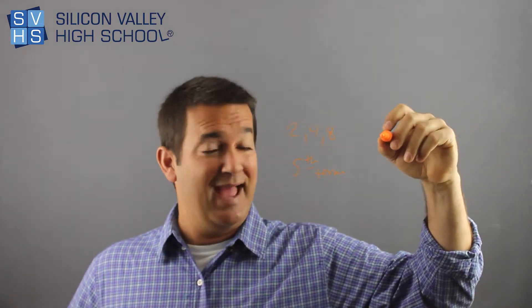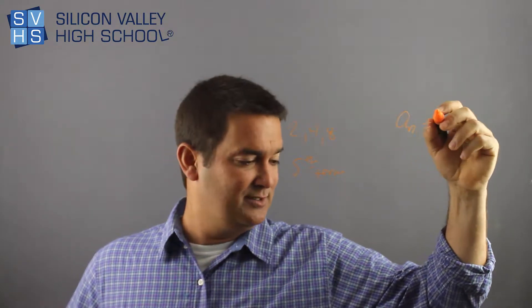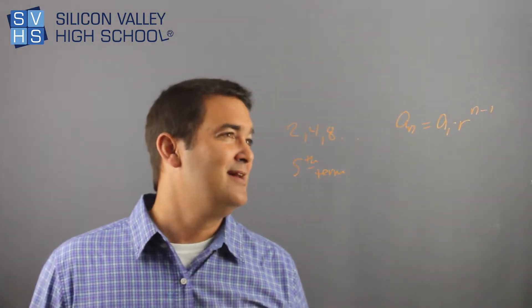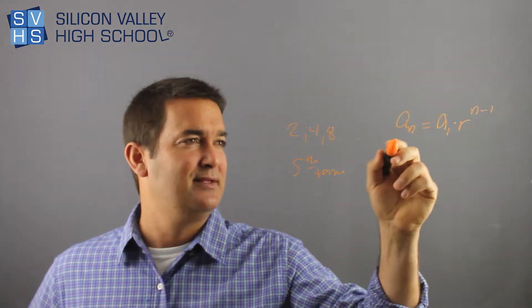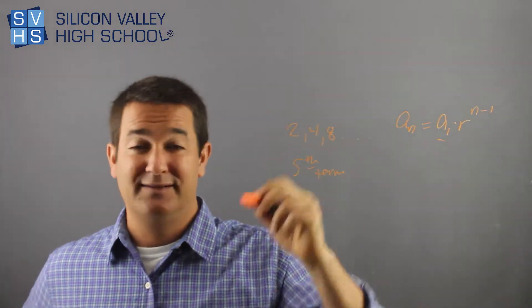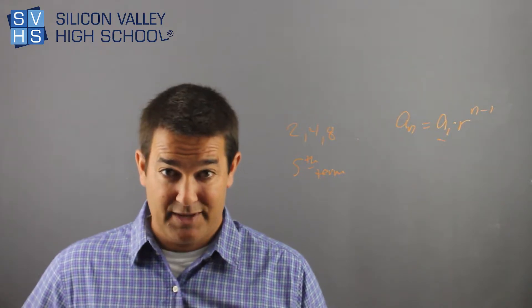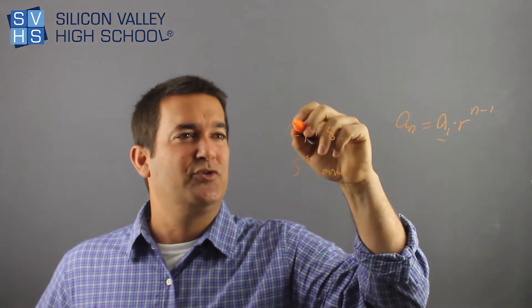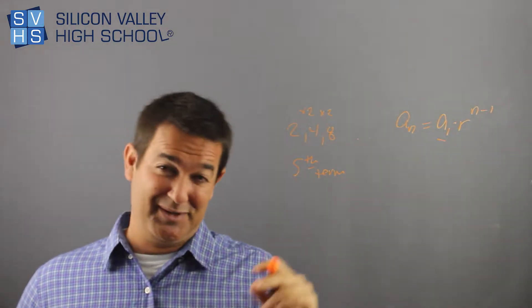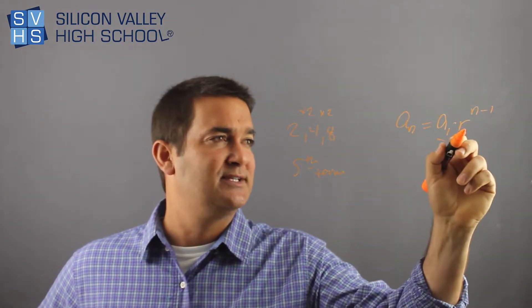This is the formula to find the nth term of a geometric sequence. a to the n, which means the nth term equals a to the 1 times r raised to the n minus 1. So what is all this drama? This is the nth term. This is the first term. So that's easy. In this case, the first term is 2. r is this common ratio concept. It's what's being multiplied every time. What's being multiplied in this case? It looks to me like times 2 times 2. So in this case, simple problem so I can explain this. r is definitely 2. This is the common ratio.